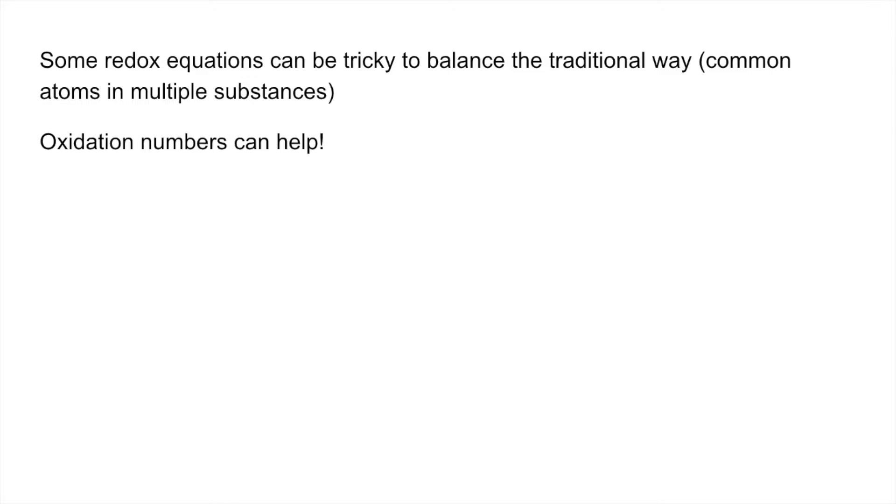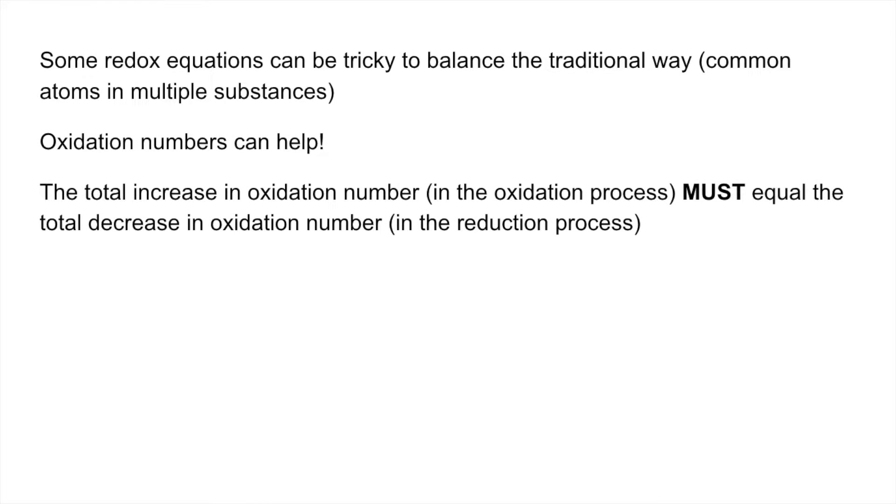So oxidation numbers can help, and the rule is the total increase in oxidation number in the oxidation process must equal the total decrease in the oxidation number in the reduction process. And if you think about it logically, when something's oxidised it loses electrons. So those electrons have to go somewhere. Where do they go? They go to the reduced species that gains them. So the electrons have to be equal in both processes.